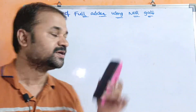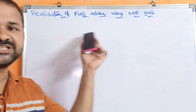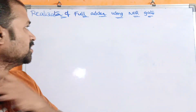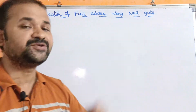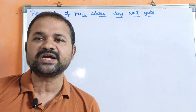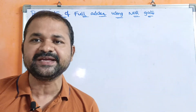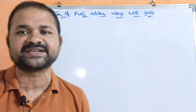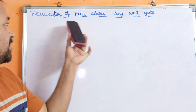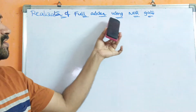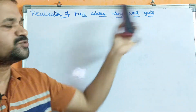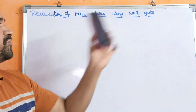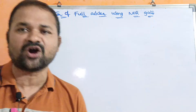Let us discuss the realization or implementation of a full adder using NOR gates. We know that a full adder means a collection of two half-adders. So here we are going to implement a full adder using NOR gates based upon half-adders using NOR gates.